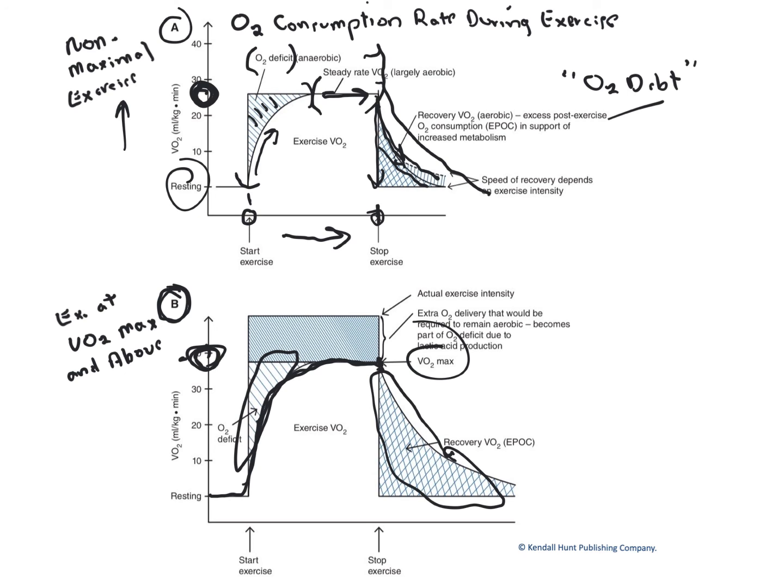And should we decide to push the limit or beyond the limit and exercise above VO2 max, we can do that, but it's going to require anaerobic processes, glycolytic ATP production, and that will ultimately build the oxygen deficit that will have to be repaid later on.